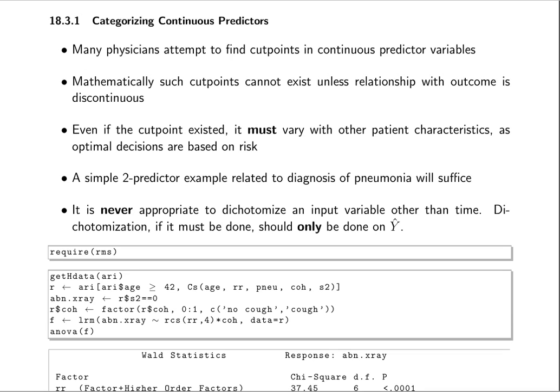Physicians and epidemiologists in particular seem to like categorization, and it's pretty easy to show that cut points in continuous variables cannot really exist and be replicable unless the underlying relationship with the outcome is discontinuous. It's also easy to show, as we will in the following example,